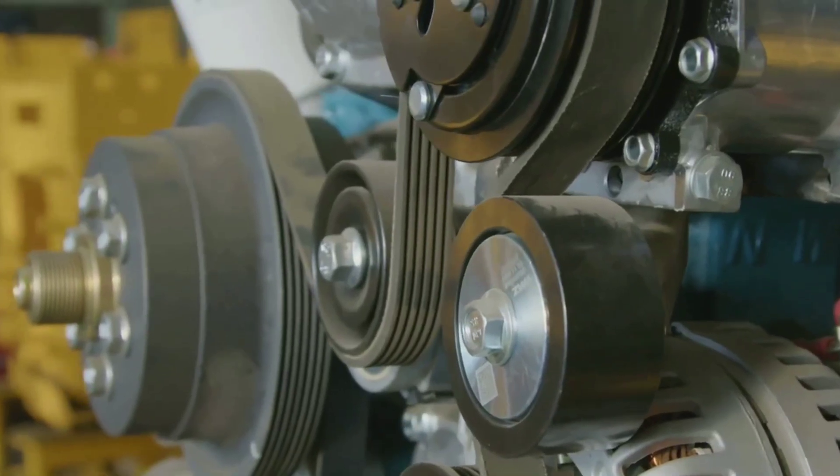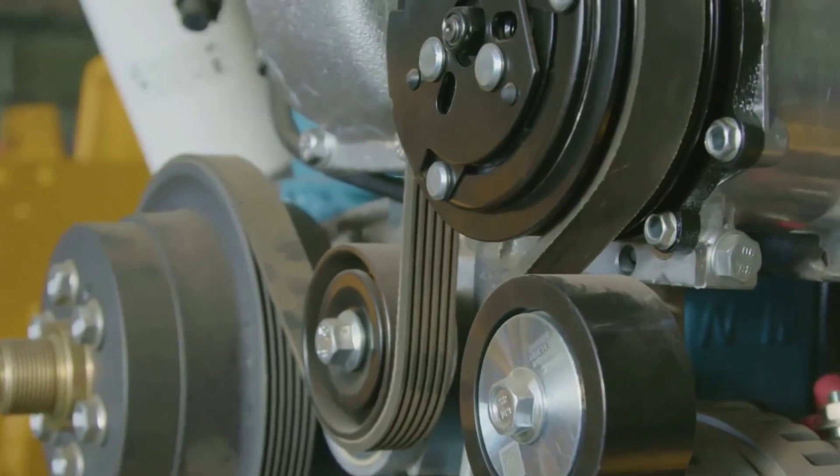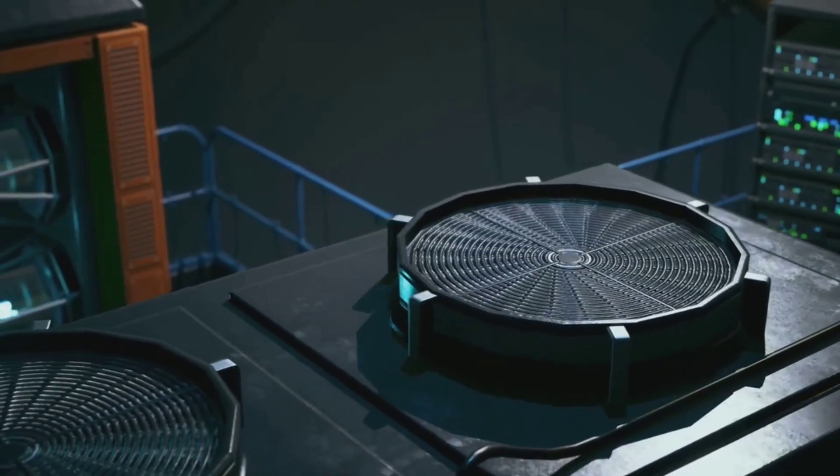The commutator and brushes are the bridge between the stationary and spinning worlds. That's how a DC motor keeps spinning without stopping. Now let's follow the journey of electricity through the motor.